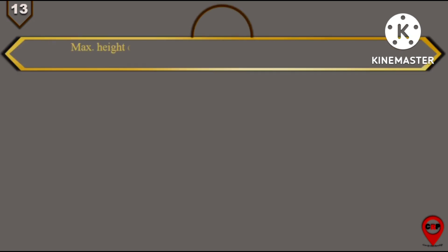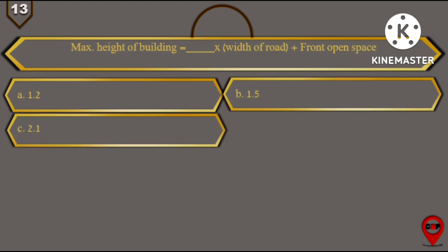Next question, question number 13: Maximum height of the building is equal to blank multiplied by width of road plus front open space. So we have to fill in the blank. So options are: 1.2, 1.5, 2.1, and 2.8.